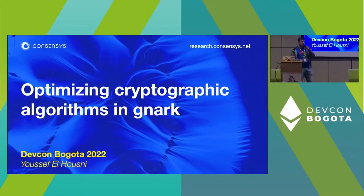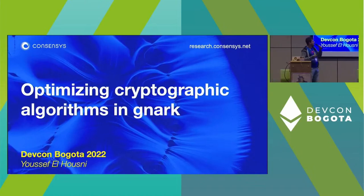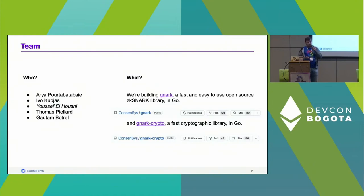Hi everyone, my name is Youssef Housni. I work at Consensys on gnark and I'm going to talk about some of the algorithmic optimizations we have in gnark that make it fast. We are a team of five and we are building two libraries in Go: one called gnark, which is an easy-to-use open source library for SNARKs, and the other one is gnark-crypto.